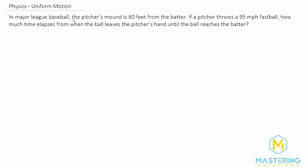They tell us that the distance is 60 feet from the batter and they give us the speed. The distance, or the delta x, is equal to 60 feet. And they tell us that the velocity is equal to 95 miles per hour.